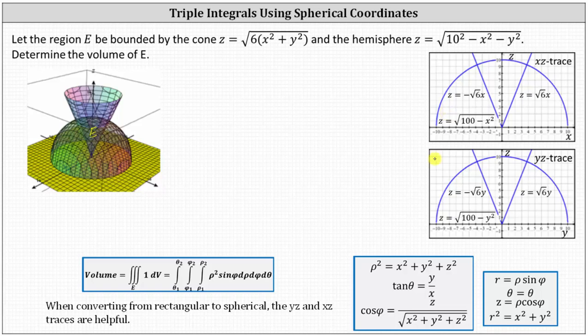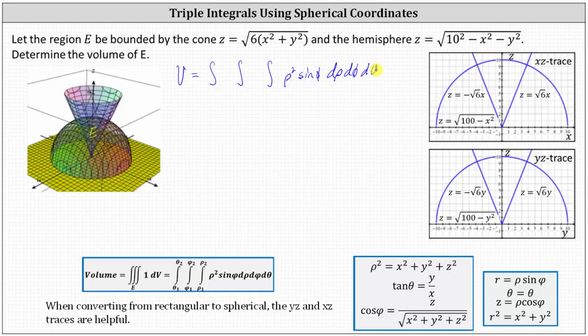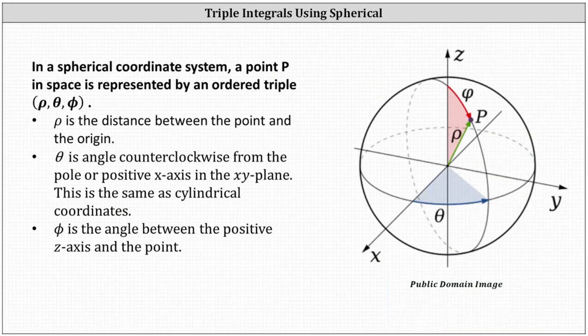Now set up the triple integral to determine the volume. The volume of E is equal to the triple integral of rho squared sine phi d rho d phi d theta, where we need to determine limits of integration for rho, phi, and theta. For a quick review: rho is the distance between the point and the origin; theta is the angle counterclockwise from the positive x-axis in the xy-plane; and phi is the angle between the positive z-axis and the point, all illustrated on the right.